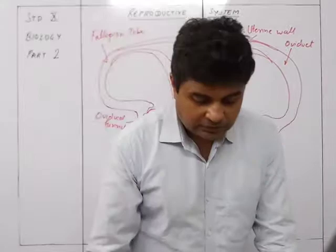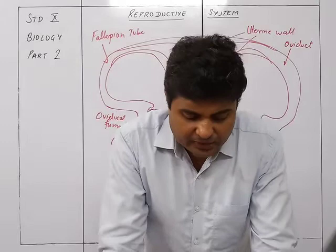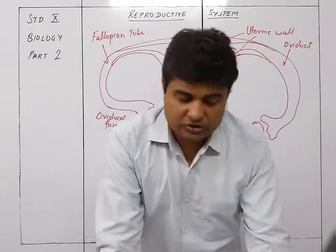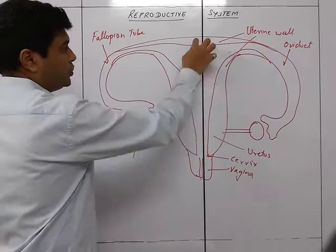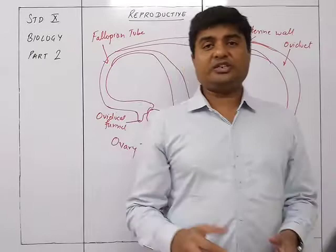A sac-like or pear-shaped uterus is present for the growth and development of the embryo developed from the egg. Once the egg is fertilized, it remains in this muscular part — the uterus — which is a pear-shaped structure where the baby is conceived for nine months.